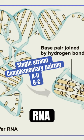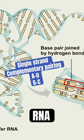Notice that G is still pairing with C and that now A is pairing with U instead of T because this is RNA, not DNA. And again, the bonds that hold the complementary base pairs here are also hydrogen bonds.